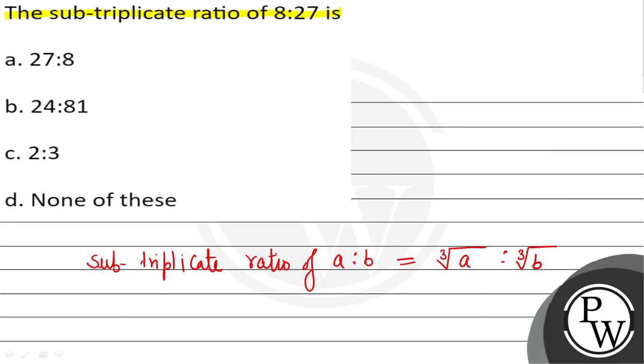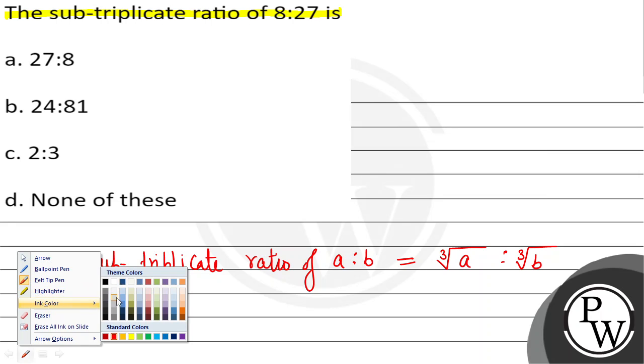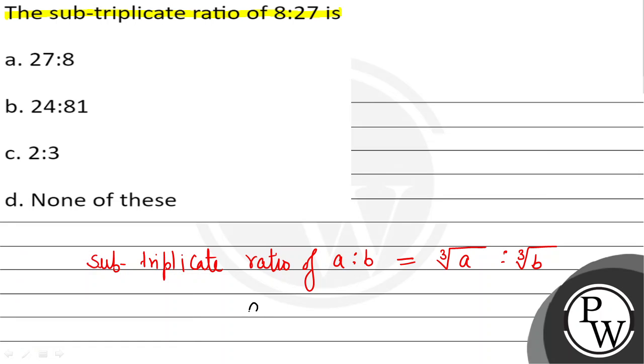यह होता है sub-triplicate ratio. अब हमें यहाँ पर किसका sub-triplicate ratio बताना है? 8:27 का. So from 8:27, A आपका आगया 8 and B आगया 27.